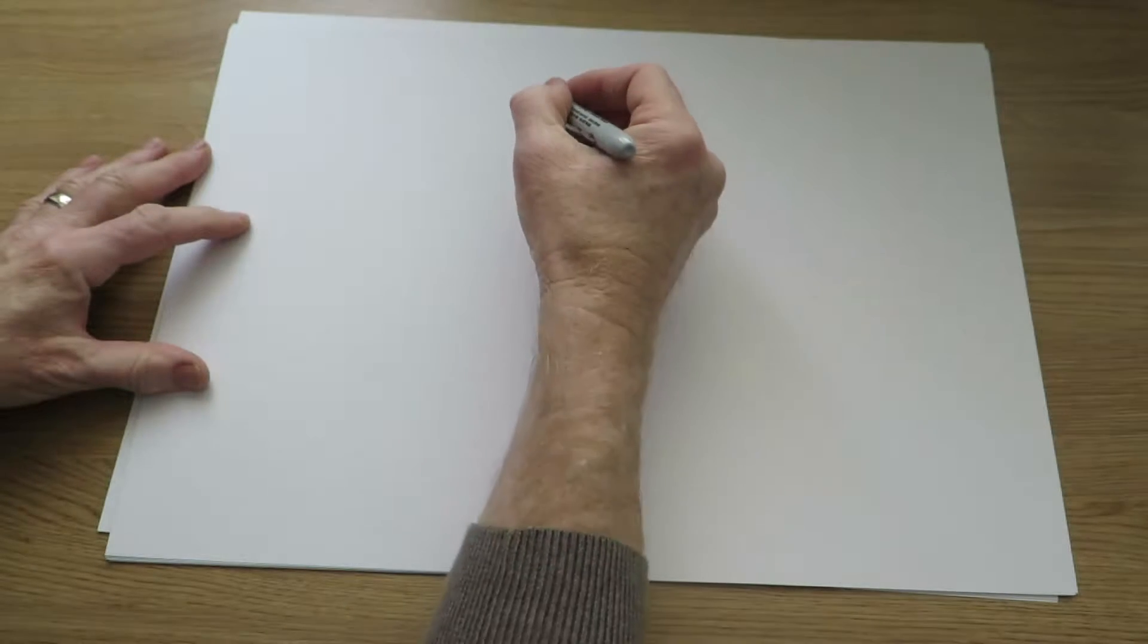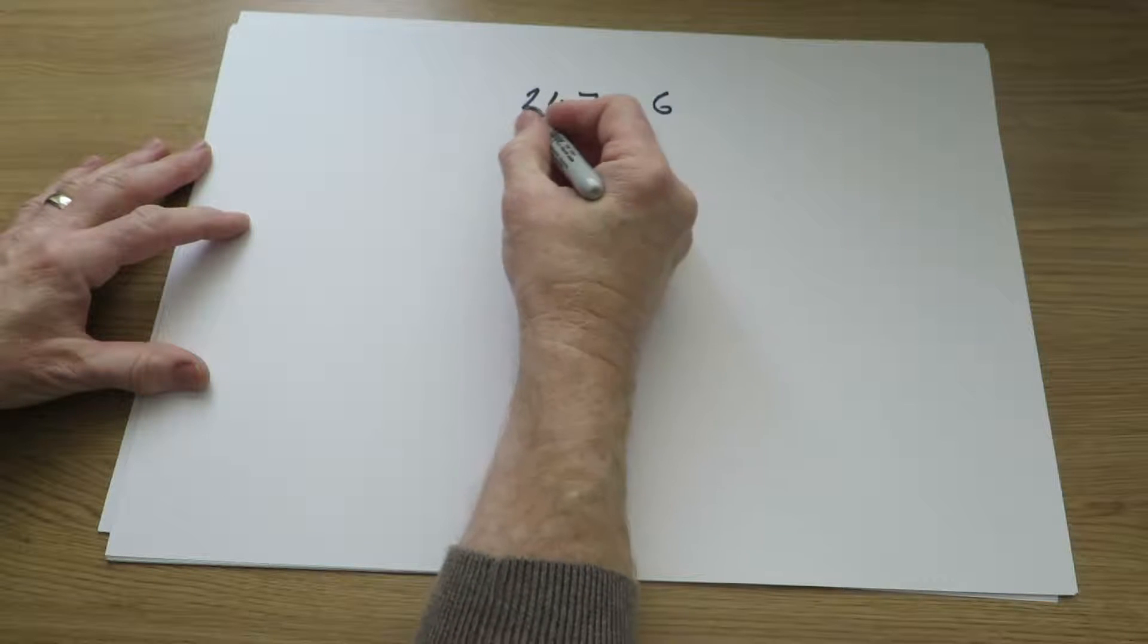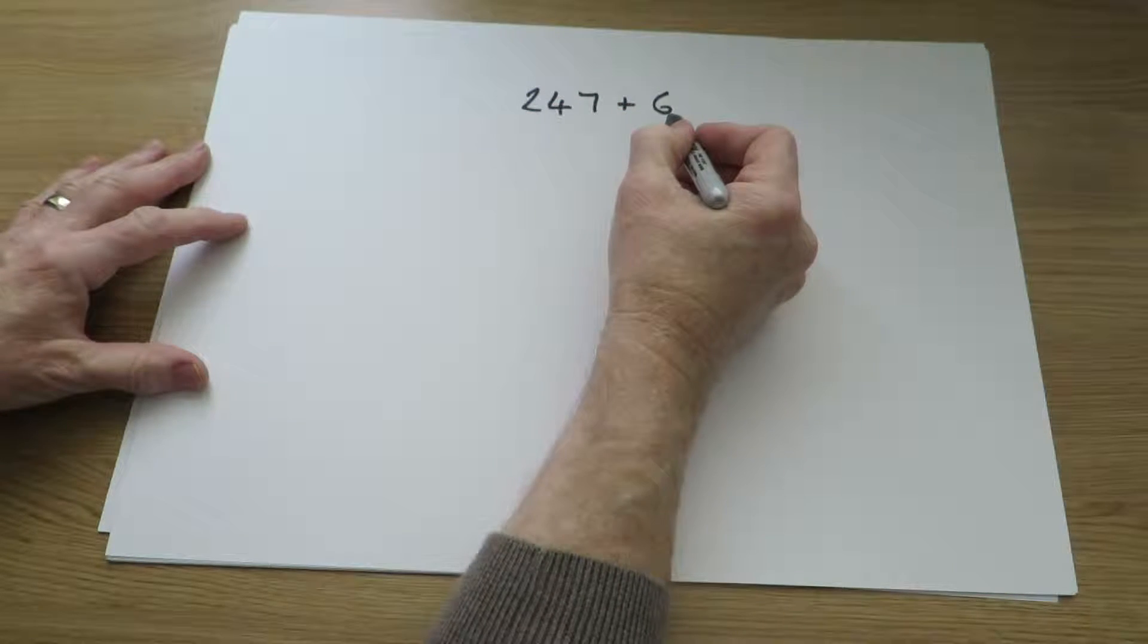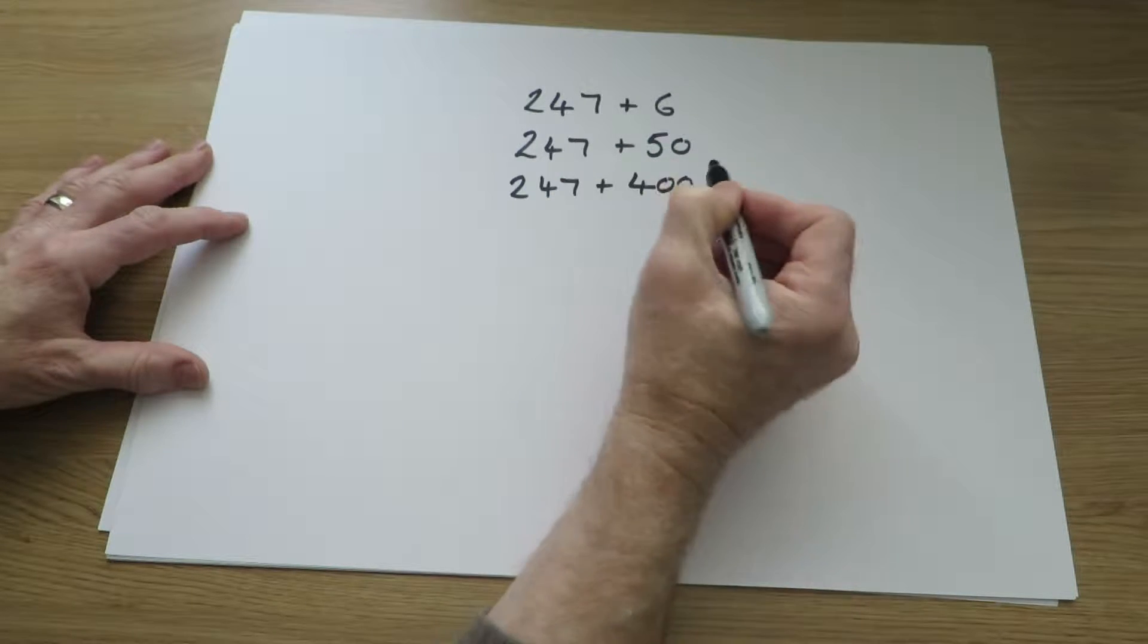They will be starting to work on operations involving 3 digit numbers. They will use their knowledge of number bonds to answer questions such as 247 plus 6, so a 3 digit number plus units or 1s, 3 digits plus 10s, 3 digits plus 100s.